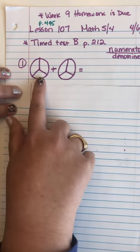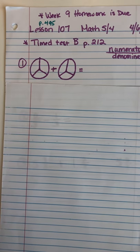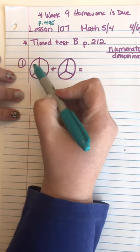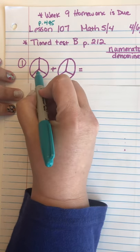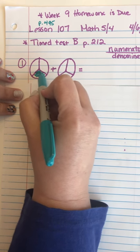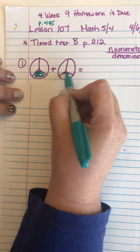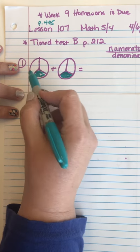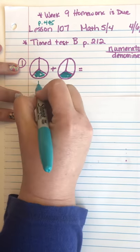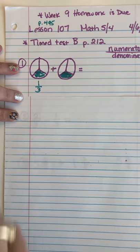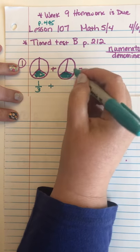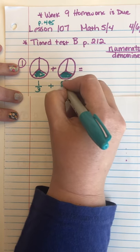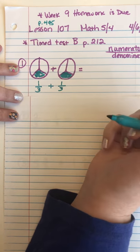Another way you can look at it is on my sheet of paper — I have drawn circles divided into thirds: one, two, three pieces, so each piece is a third. I'm going to color in one-third of this circle and one-third of this piece. If I was to write this as a fraction, how much of this circle is shaded? One-third. And this circle — one piece out of three is shaded.